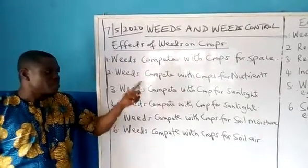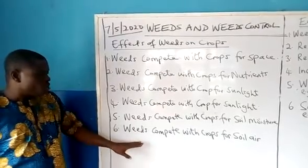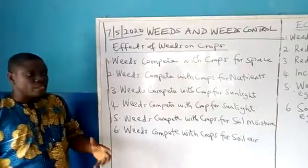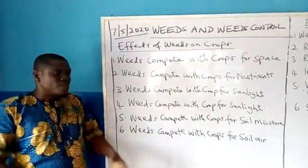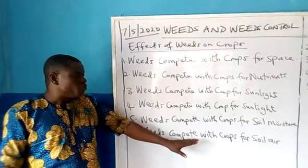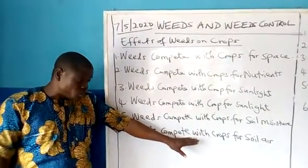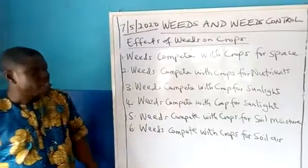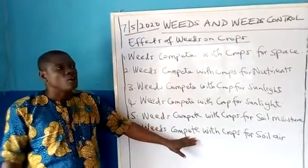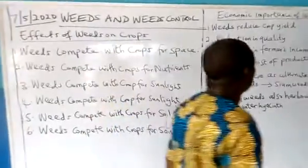Weeds absorb moisture faster than the crops. And number six: weeds compete with crops for soil air. Soil air is found between the particles found in the soil. Because the weeds also grow faster and more rapidly, they absorb more soil air than the crops themselves.